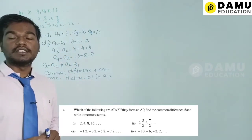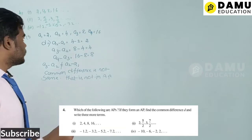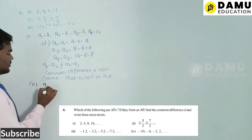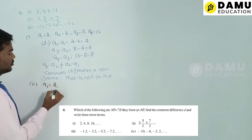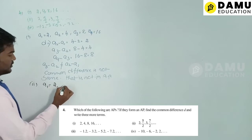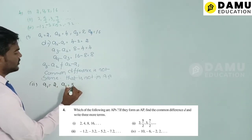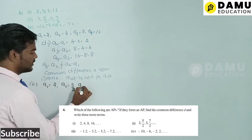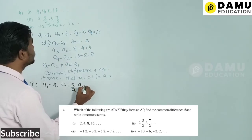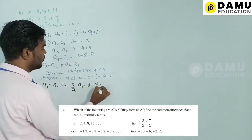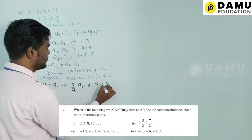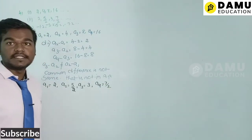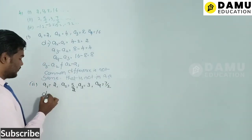For the second series, a1 = 2, a2 = 5/2, a3 = 3, a4 = 7/2. First let's check if this series is in arithmetic progression by finding the common difference.